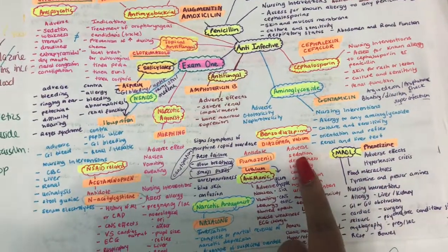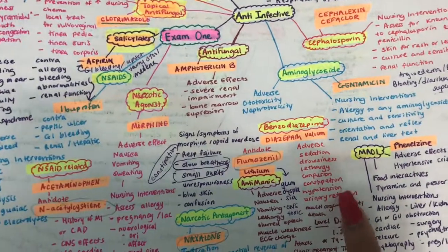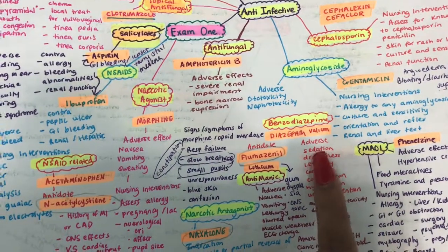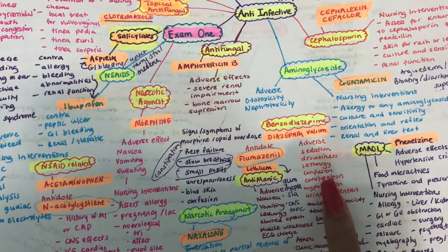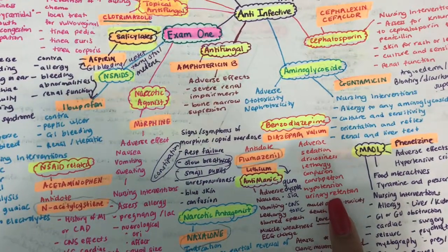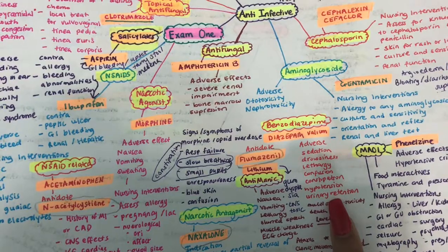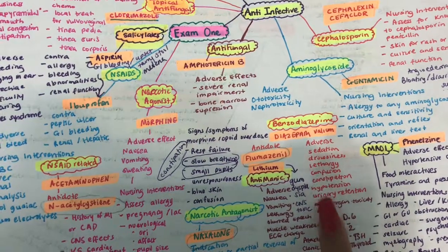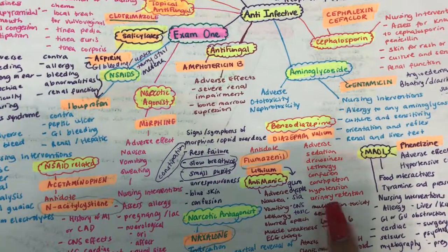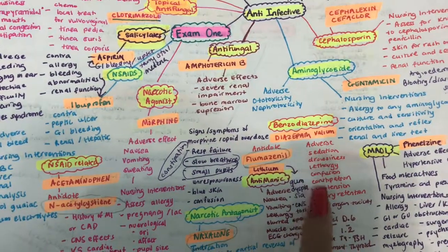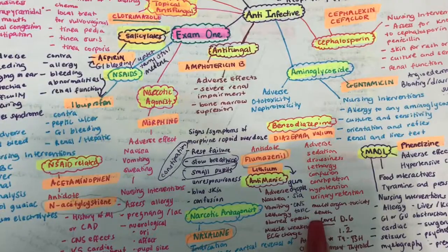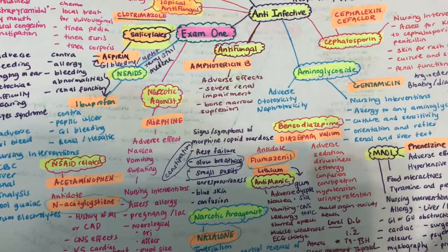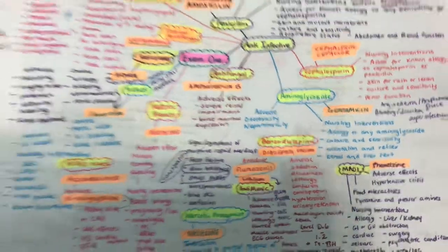Go ahead and figure out different ways to condense information. For example, if you look at all these adverse effects, they pretty much have to do with the central nervous system. So instead of writing all of these, I should have just crossed it out and wrote 'CNS effects' in general.